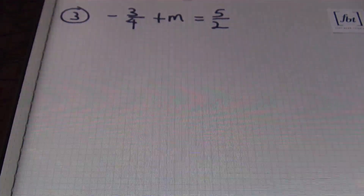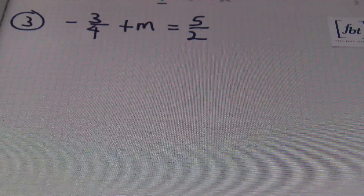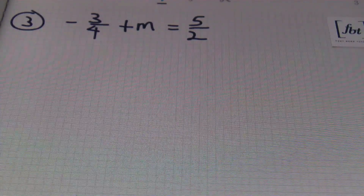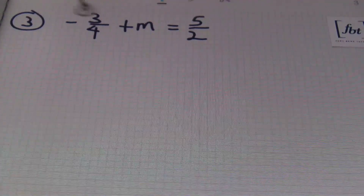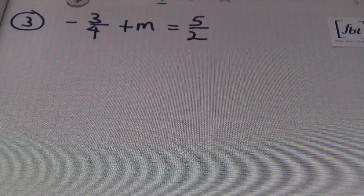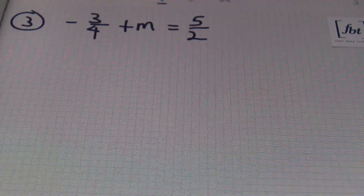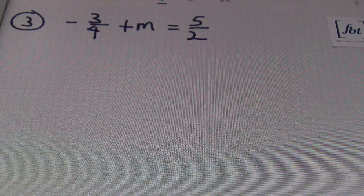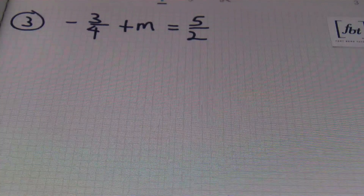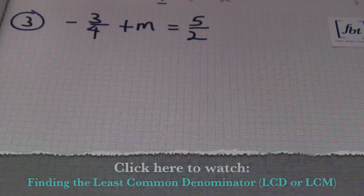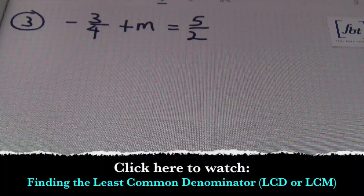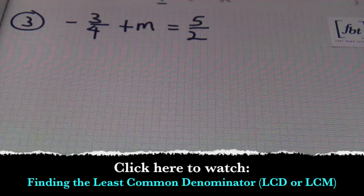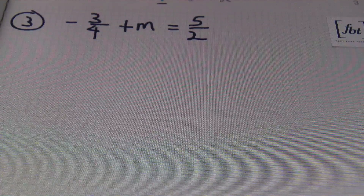Moving on to problem number three: we have negative three-fourths plus m equals five-halves. I want to eliminate the fractions, and I can do so by multiplying each and every term by the common denominator, which is four. Four is the first number that two and four can go into evenly — that LCD, the least common denominator. By the way, if you're having difficulty finding the least common denominator, feel free to check out our video on Finding the Least Common Denominator — the LCD or LCM.